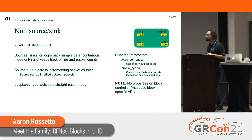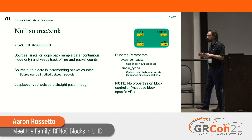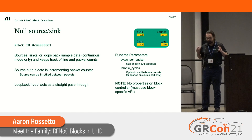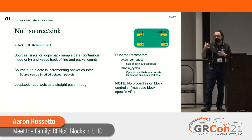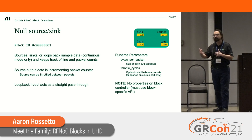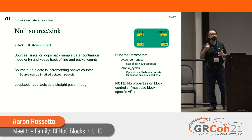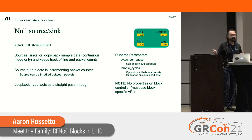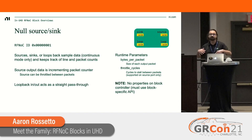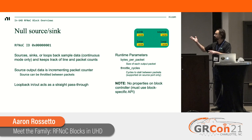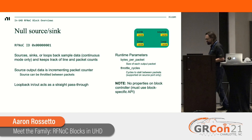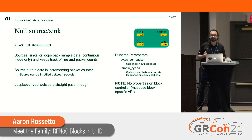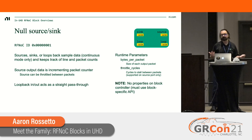The null source/sink is a very simple block that as a source produces incrementing sample data, optionally throttled so it won't constantly spam the bus — you can have it wait a certain number of clock cycles before producing the next output. It can also accept whatever data you put into the sink input, and anything coming into the loopback input goes directly to the loopback output, with counters on each to monitor expected sample counts. It's great for testing flow and getting things working before using your actual radio source.